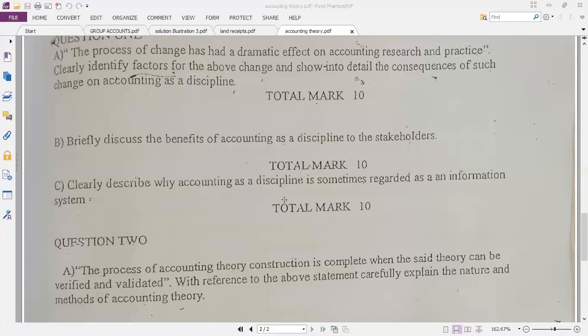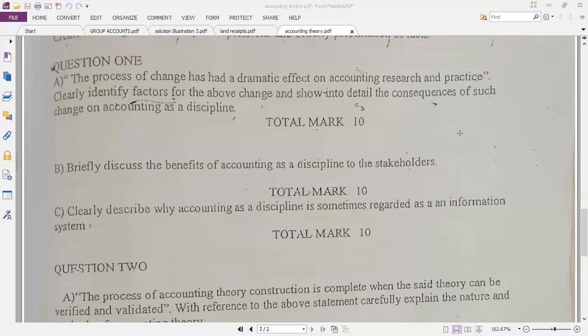Now, look at the next question. Clearly describe why accounting as a discipline is regarded as an information system. When we are looking at the various images of accounting, we look at that. So, now, when you are looking at the various images of accounting, you talk about the information system as an input, process, output, approach.